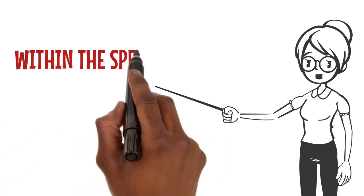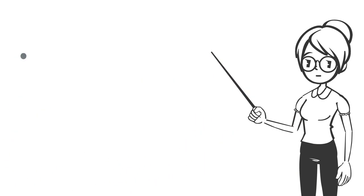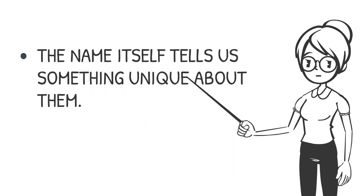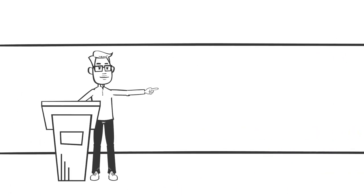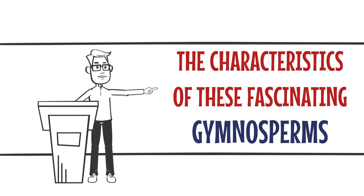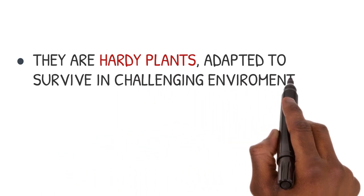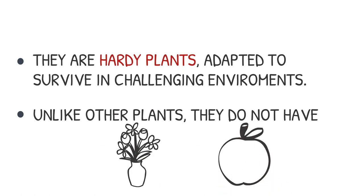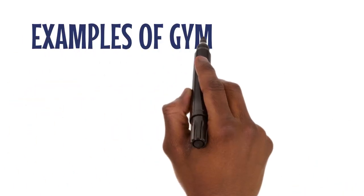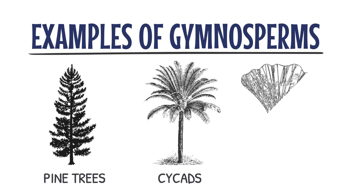Within the Spermatophyta, we find an interesting subgroup known as Gymnosperms. The name itself tells us something unique about them — 'gymno' means naked and 'sperma' means seed. They are hardy plants adapted to survive in challenging environments. Unlike other plants, they do not have flowers or fruits. Some common examples of Gymnosperms include towering pine trees, ancient cycads, and the lovely Ginkgo biloba tree, known for its fan-shaped leaves.